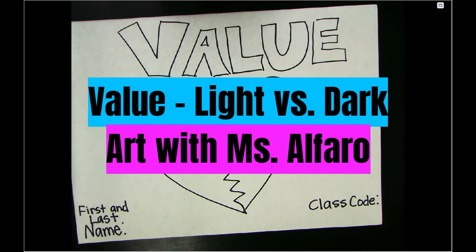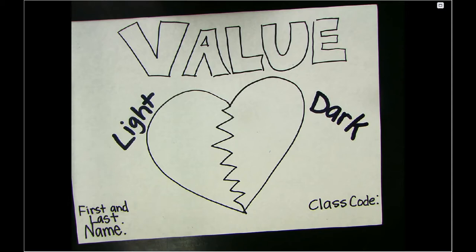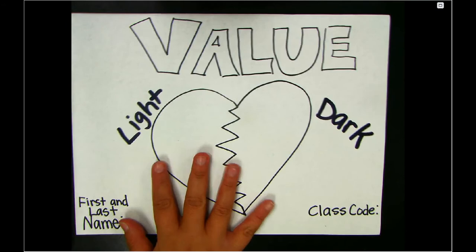Hello artists! Today we are going to continue talking about value. We know that value is one of the seven elements of art and it describes the lightness or the darkness of a color.